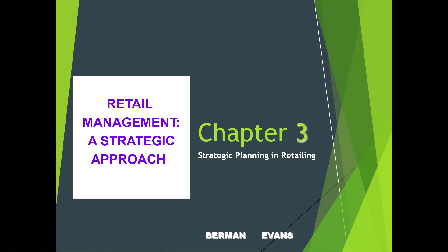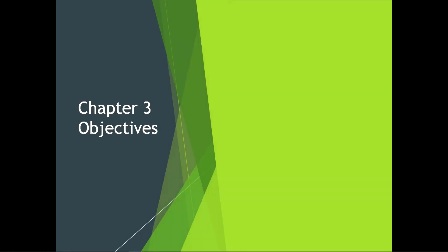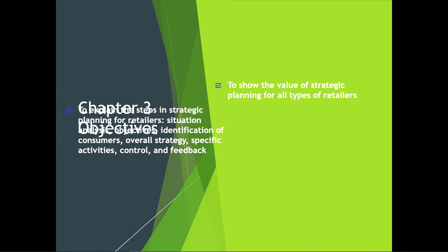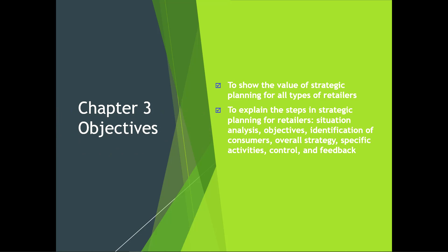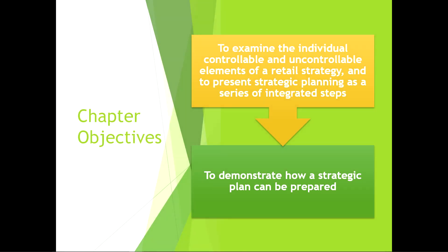Welcome to Chapter Three: Retail Management — A Strategic Approach. The chapter has been updated and will be posted today. The objectives for this chapter are to show the value of strategic planning for all types of retailers, to explain the steps in strategic planning, to examine controllable and uncontrollable elements of retail strategy, and to present strategic planning as a series of integrated steps and demonstrate how a strategic plan can be prepared.